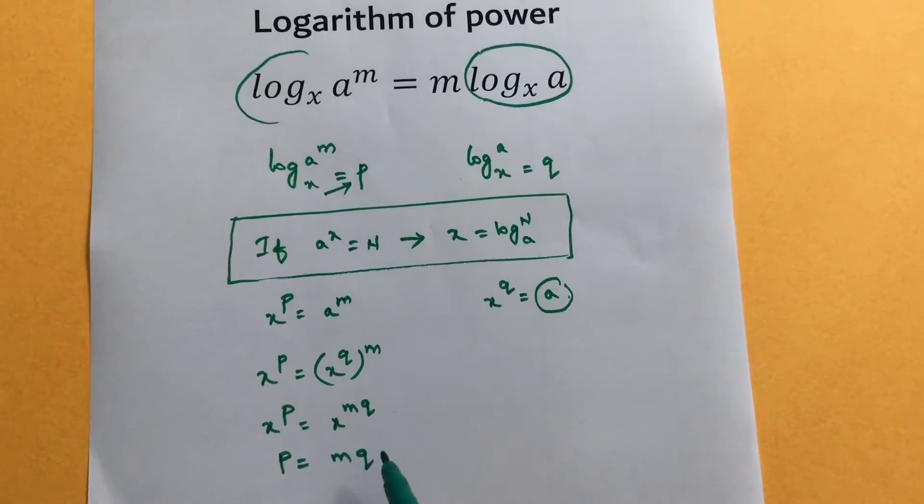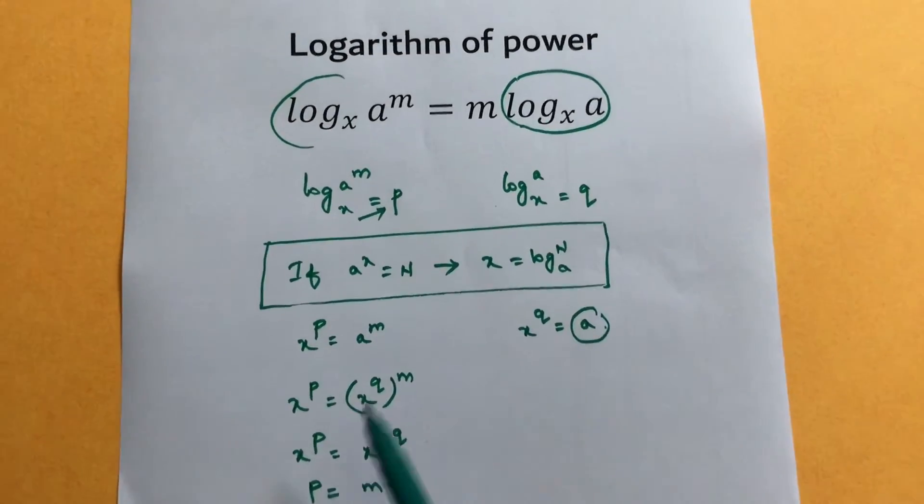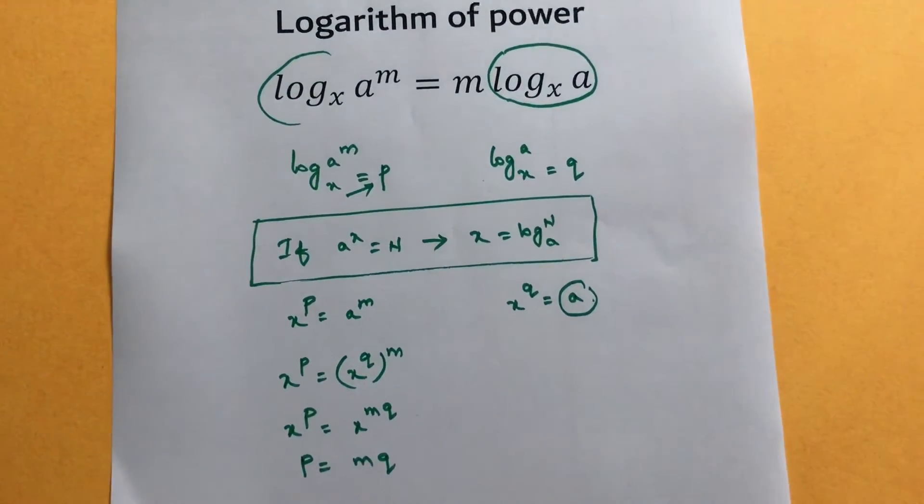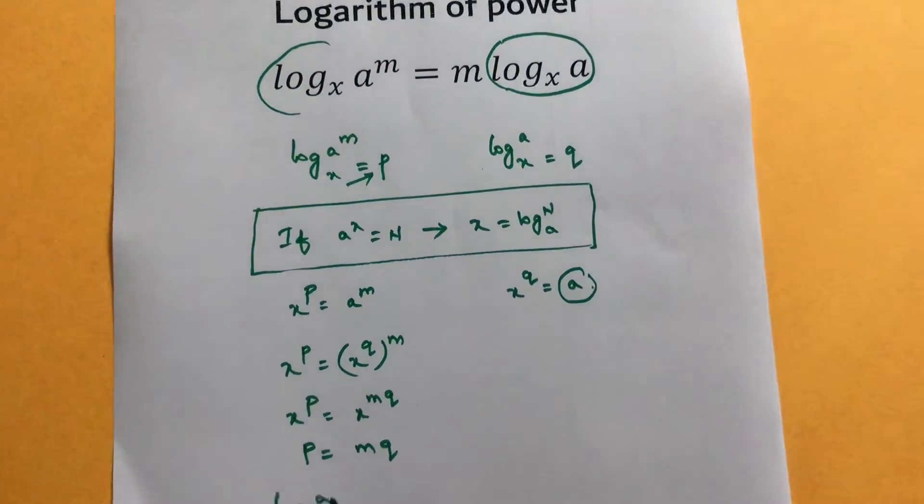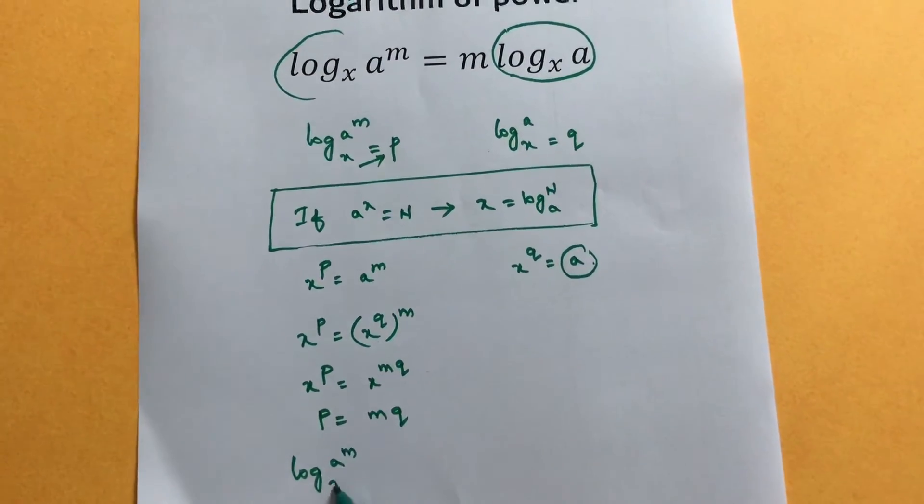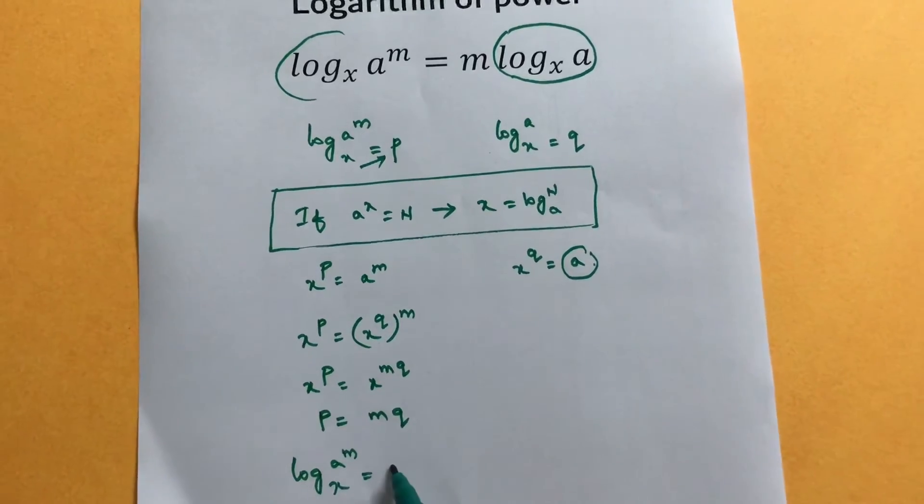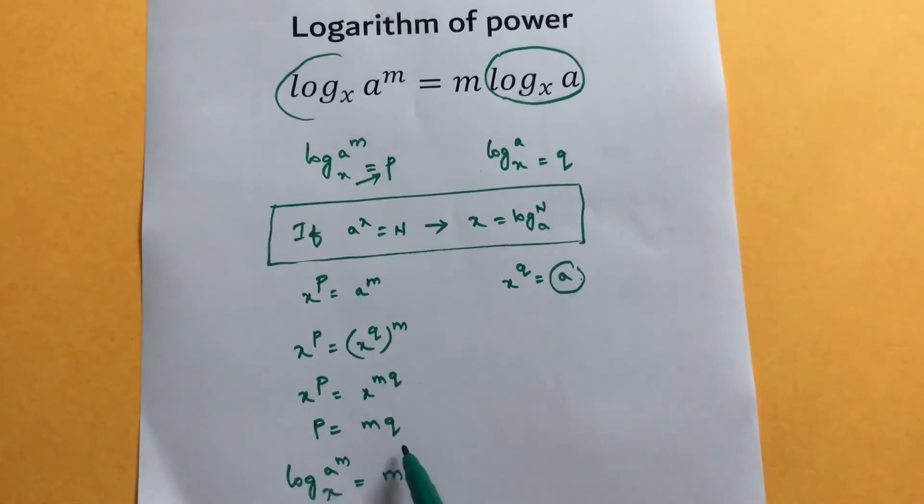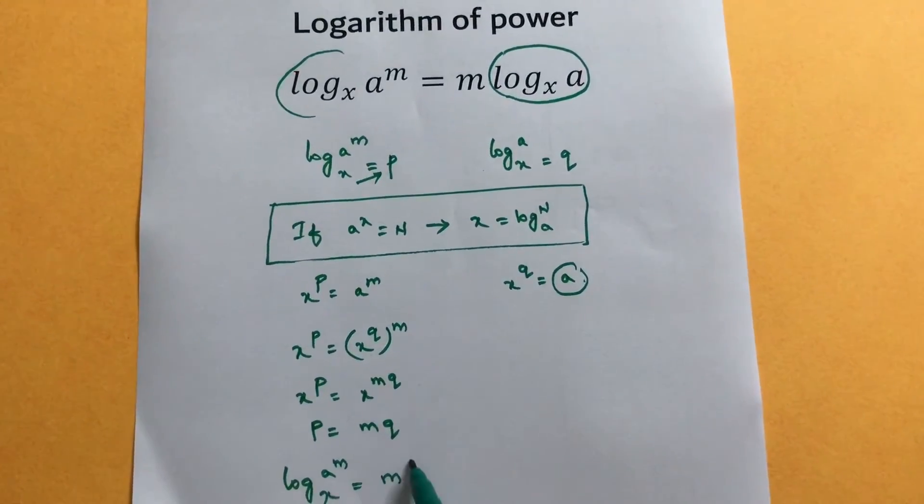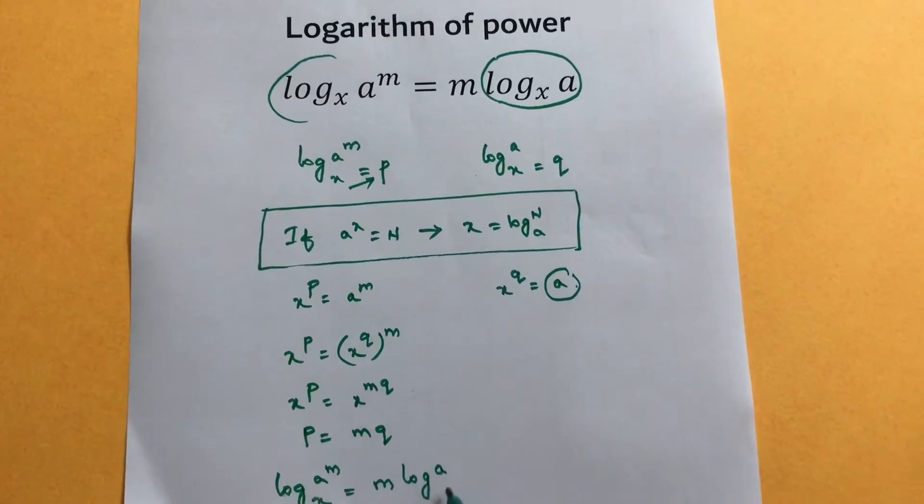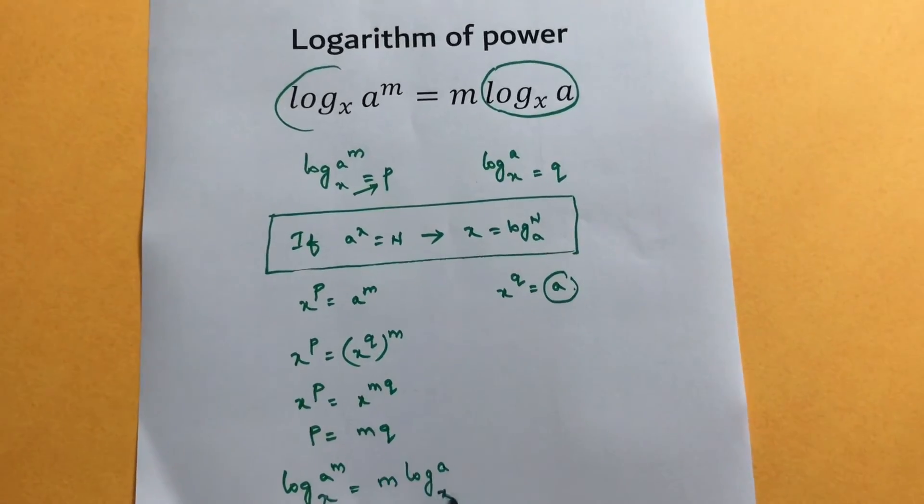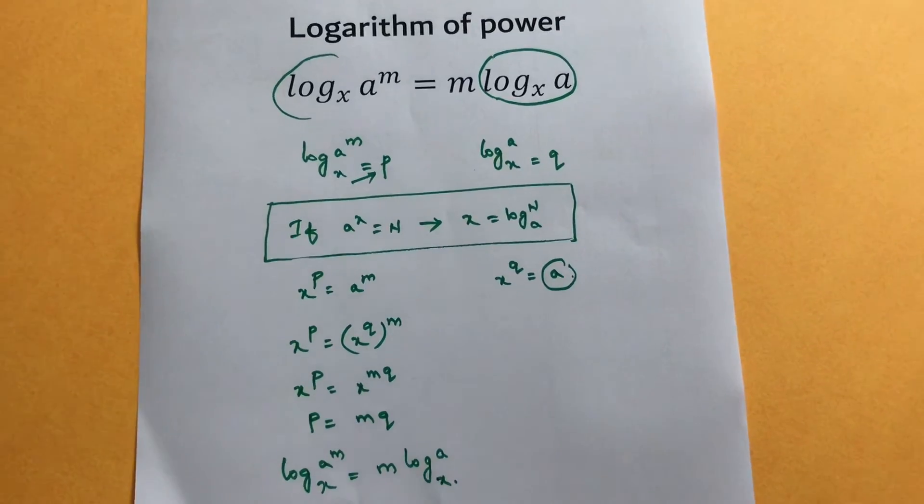But what is the value of p? We defined p as log base x of a to the power m. So log base x of a to the power m equals m times q, which is m times log base x of a. Thanks for watching.